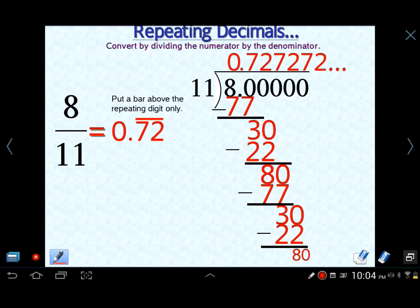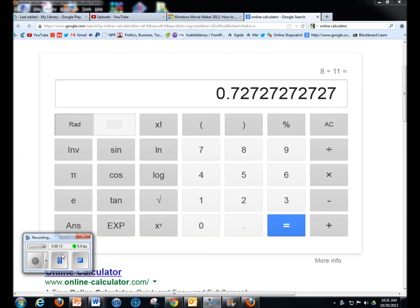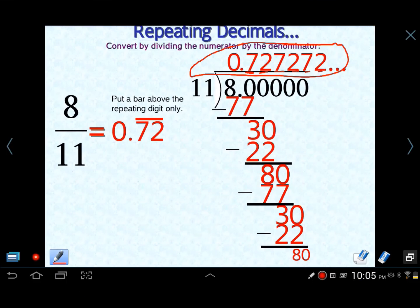Now here's an example of a problem where you had two numbers repeating. If you look here at our quotient, we have seven two, seven two, seven two forever. So it's going to follow that pattern. Now let's go to our calculator here and figure out eight elevenths. So there's our answer: zero and seventy-two hundredths with the seven and the two repeating.